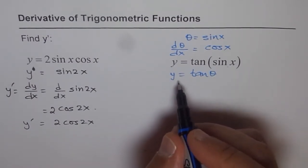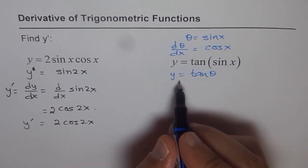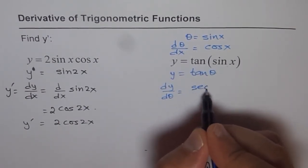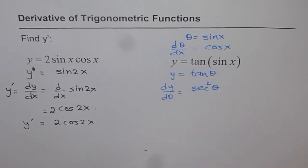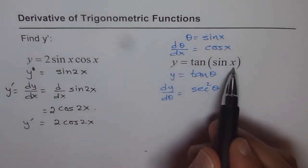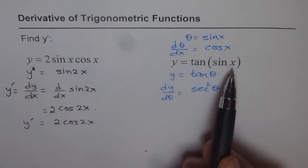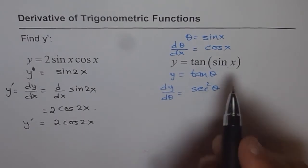So we will differentiate with respect to theta. So we get dy d theta equals to secant square theta, right? But what do we want to find? We want to find dy dx. That is what this y dash means. This y dash means differentiate with respect to the variable, x.